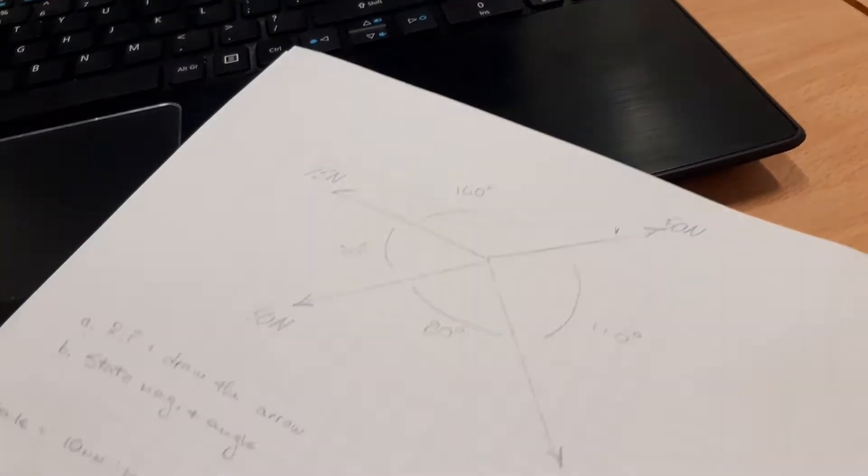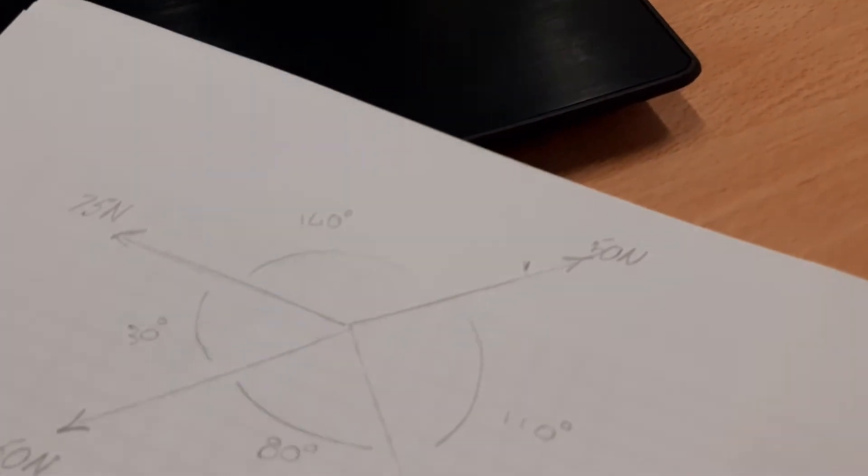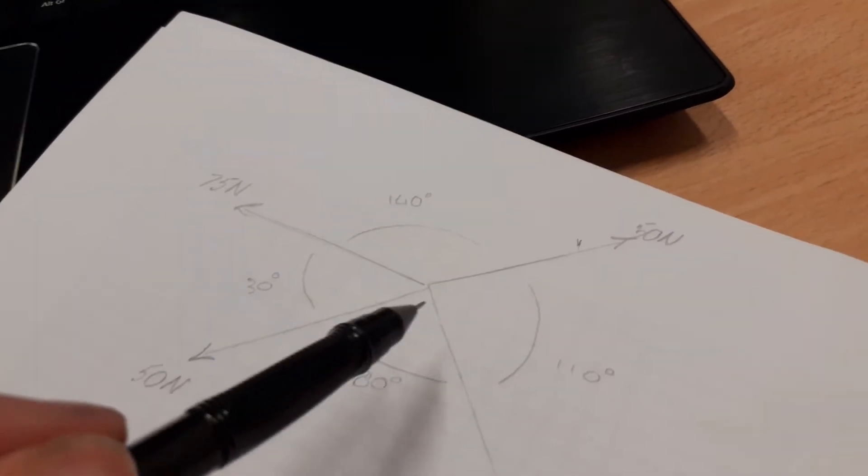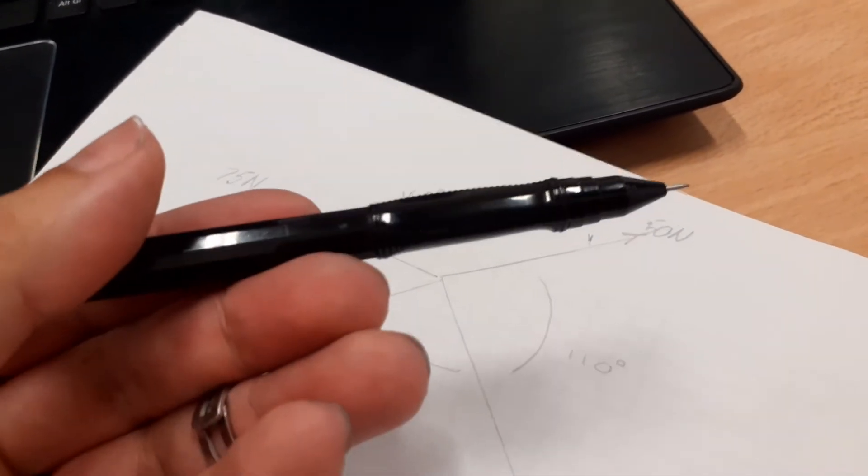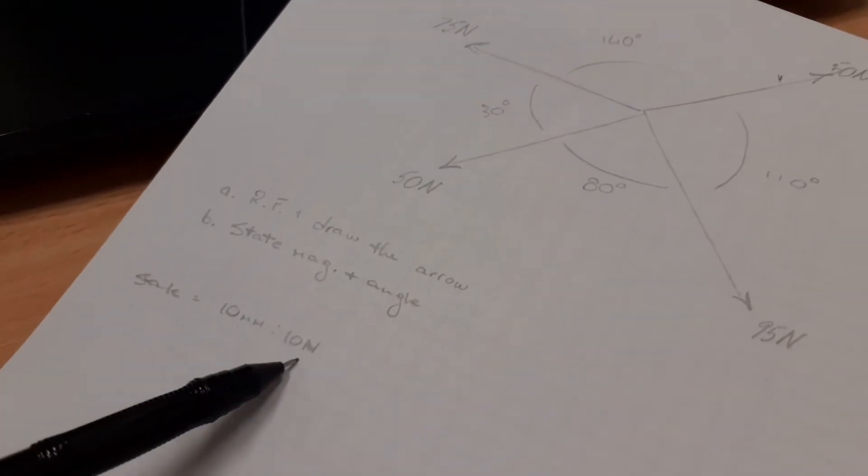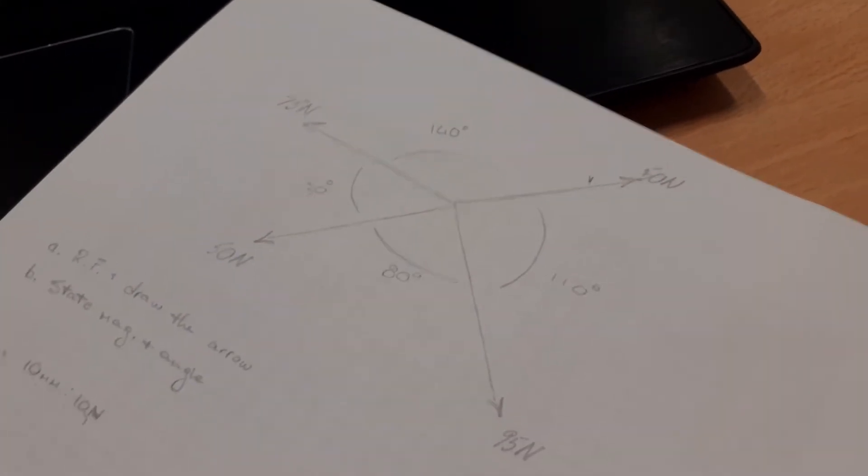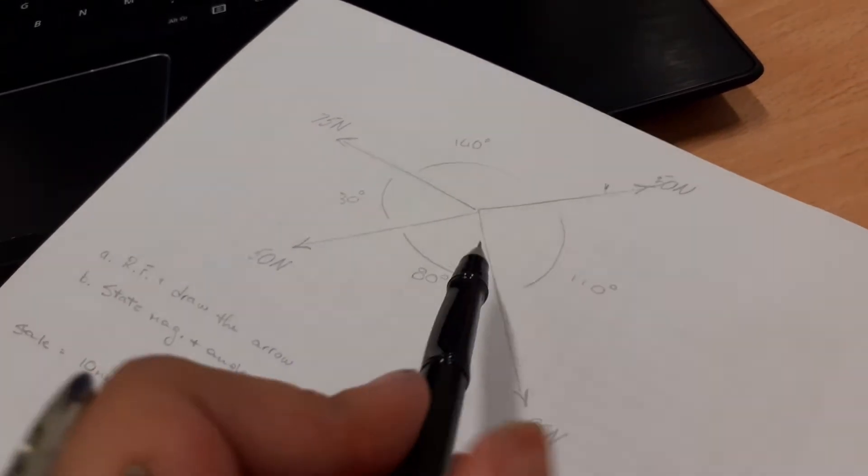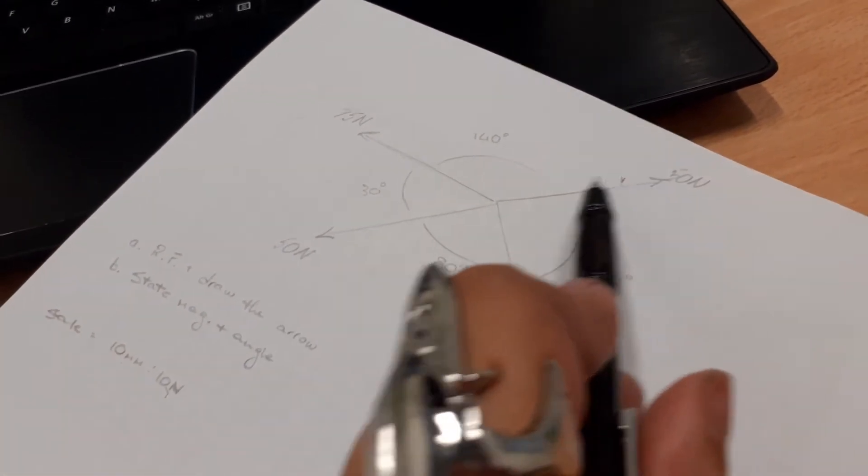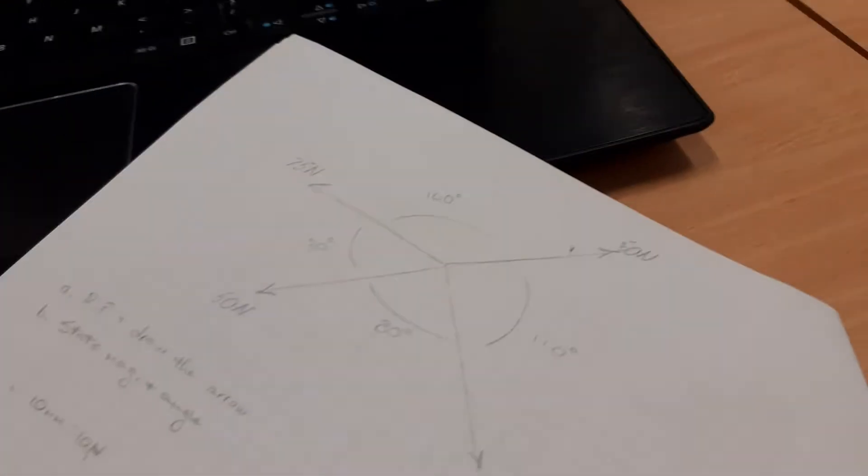That one is 50 newtons and you have to see the direction which the arrow is going. Now the scale is 10 millimeters to 10 newtons, so what we're going to do first is draw a parallel line to this line in your free space like that. Since it's 50 newtons and the scale is 10 millimeters to 10 newtons, this has to be 50 millimeters. He has to draw us to exactly 50 millimeters.